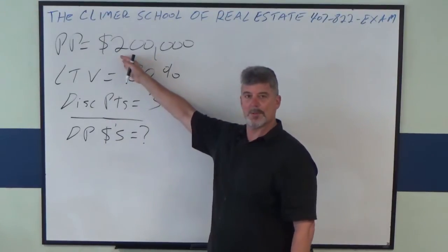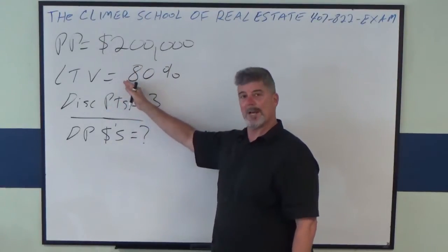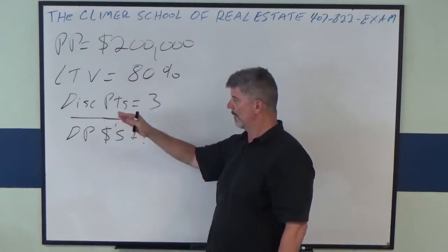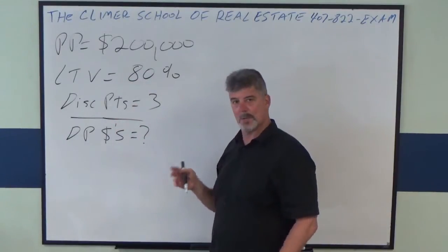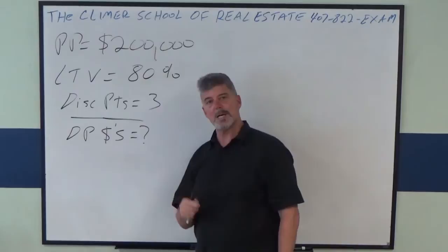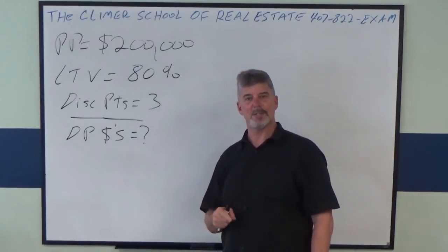We have a purchase price of $200,000. We have a loan to value of 80%. We have three discount points. And the question is, how much money do we need at closing to pay for this loan?